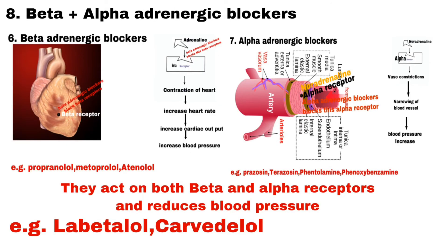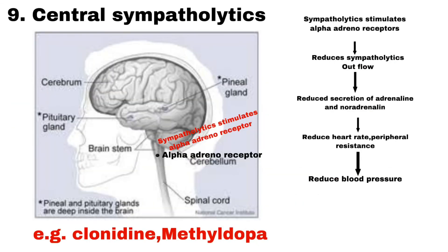Number 8 is Beta and Alpha Adrenergic Blockers. Beta and alpha receptors are available in both cardiac muscle as well as blood vessels. Adrenaline and noradrenaline can combine with these beta and alpha receptors and increase blood pressure. So these beta plus alpha adrenergic blockers block both alpha receptors and beta receptors to reduce blood pressure. Examples are Labetalol and Carvedilol.